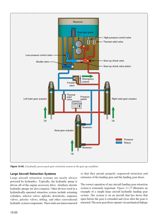Large aircraft retraction systems are nearly always powered by hydraulics, typically driven off the engine accessory drive, with auxiliary electric hydraulic pumps also common. Other devices include actuating cylinders, selector valves, uplocks, downlocks, sequence valves, priority valves, tubing, and other hydraulic system components. The correct operation of any landing gear retraction system is extremely important. In one example system, when the flight deck gear selector is moved to gear up, it positions a selector valve to allow pump pressure to access eight different components: three downlocks are pressurized and unlocked, and each gear receives pressurized fluid to the gear-up side through an unrestricted orifice check valve, driving the gear into the wheel well.